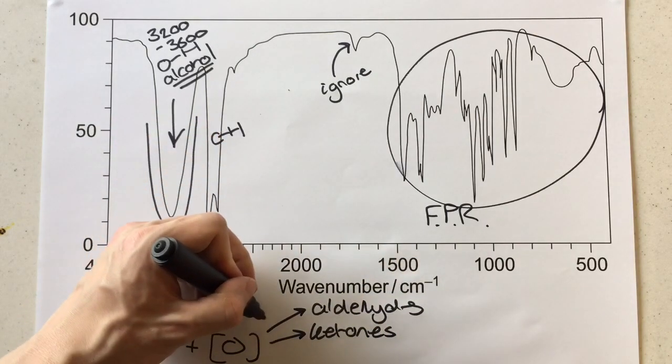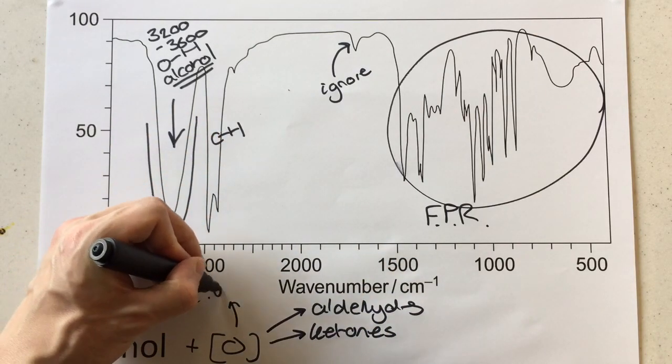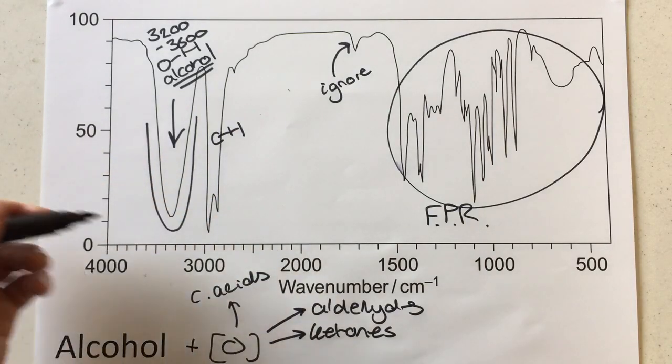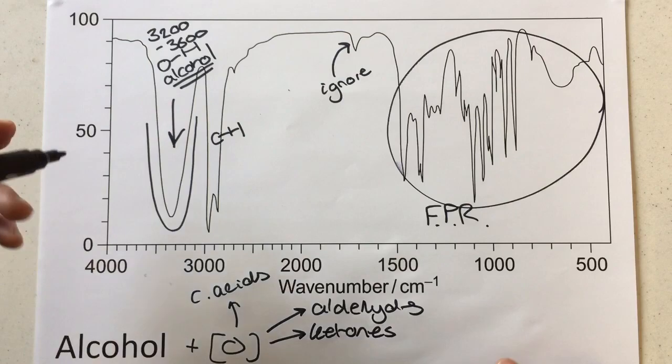And the aldehydes can become carboxylic acids as well, but we're concentrating on the alcohol just here. What we would look for is we would look for over here a C double bond O peak.